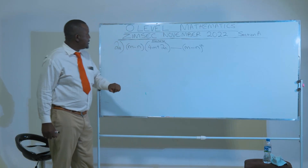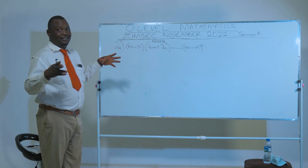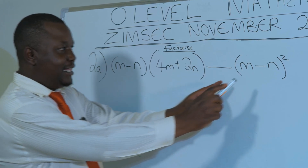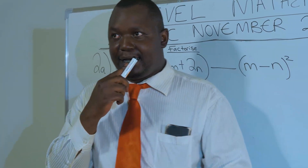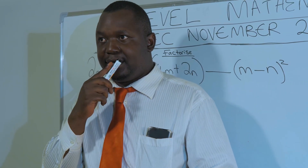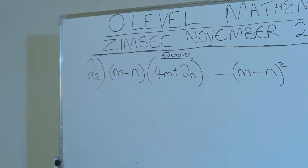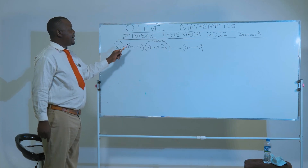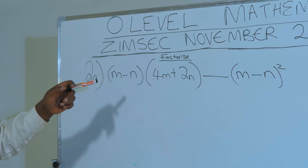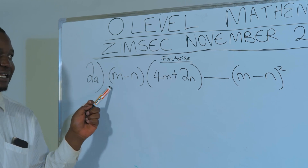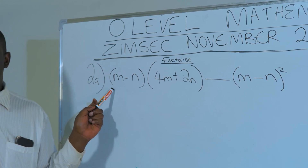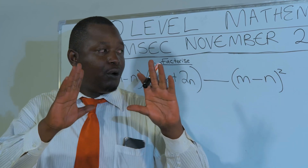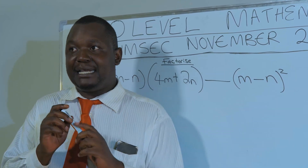So when we are to factorize this algebraic expression, first and foremost, let's look for the common factors — the number which gets into each term without leaving a remainder. As you can see, the common factor that we have here is M minus N. Because we have M minus N this side, and we have two M minus Ns this side. So the common factor is M minus N.